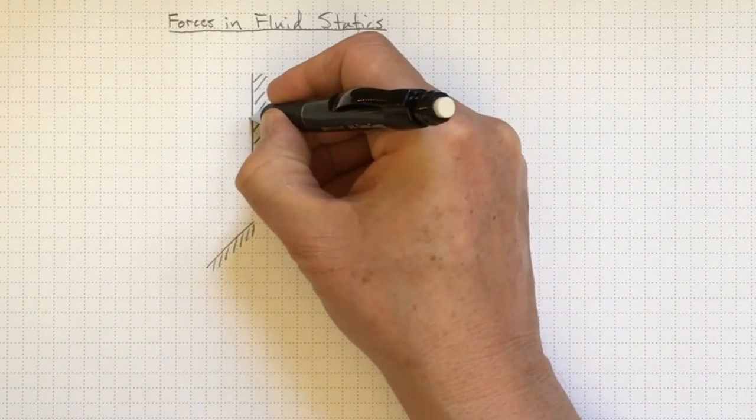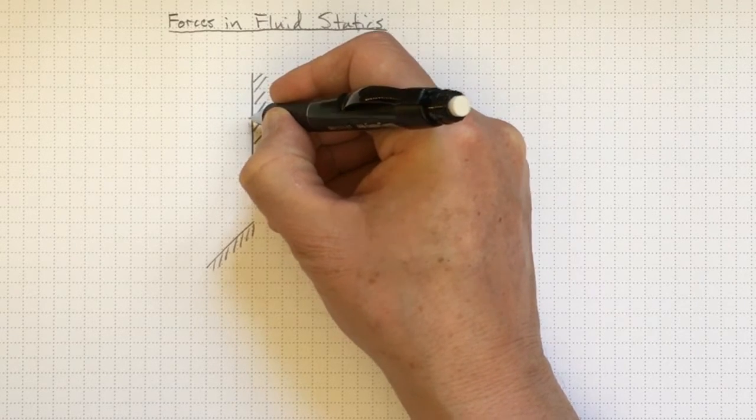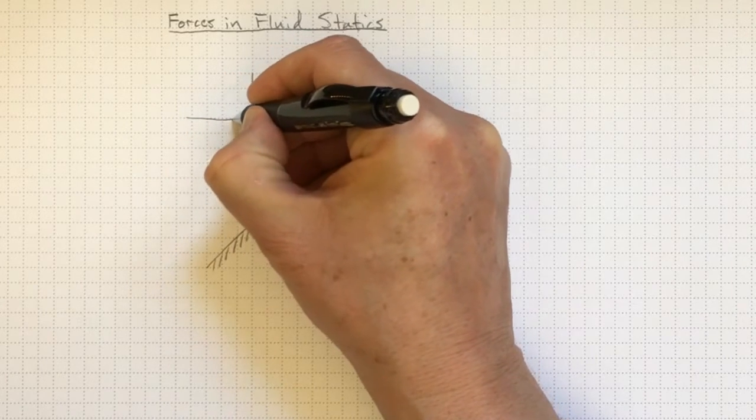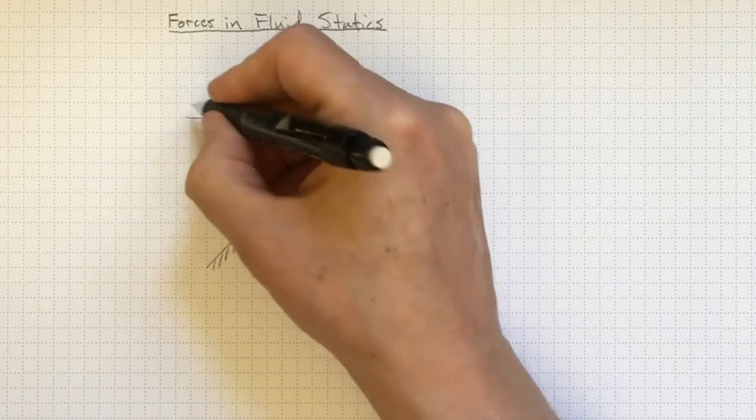Now, if we know the pressure at this location, we also know that pressure acts normal to a surface, and it acts on the surface. So if I had a pressure acting on this surface, it would be pushing in that direction with a pressure P.